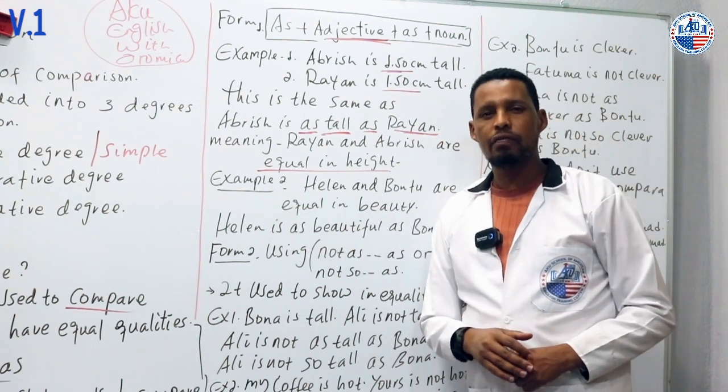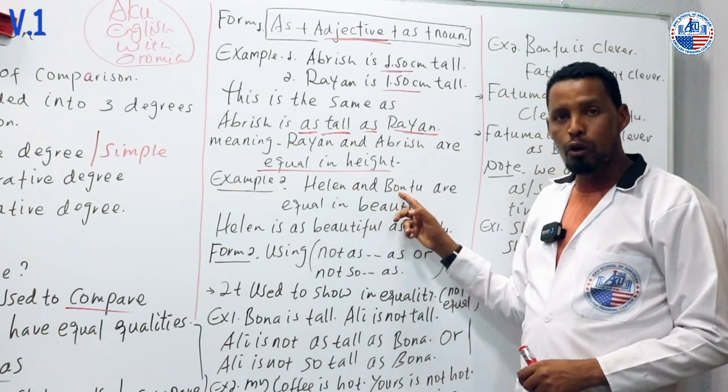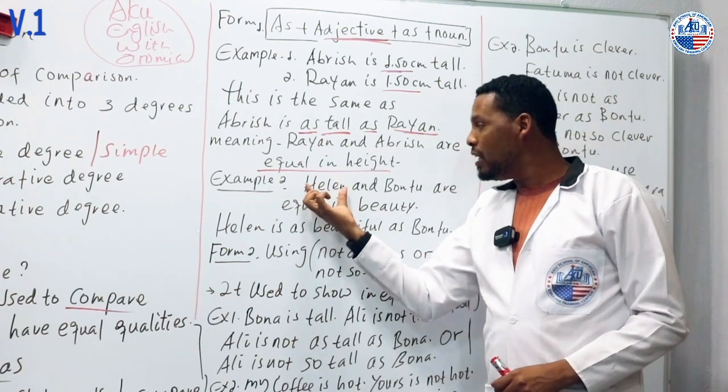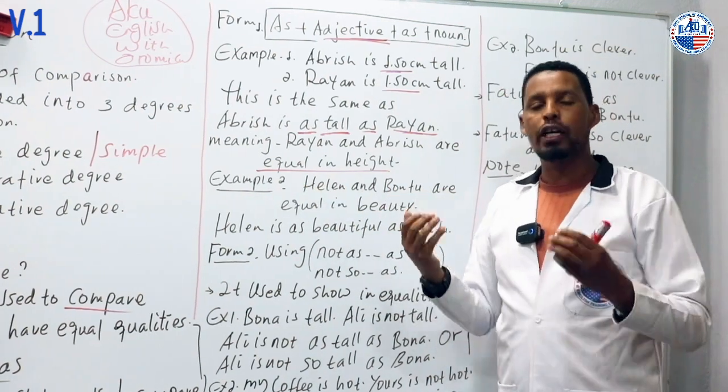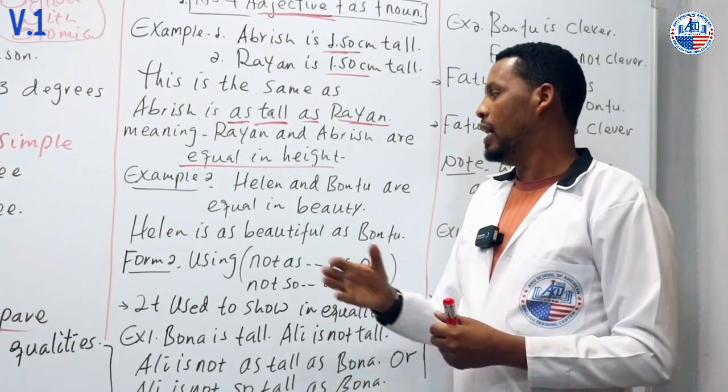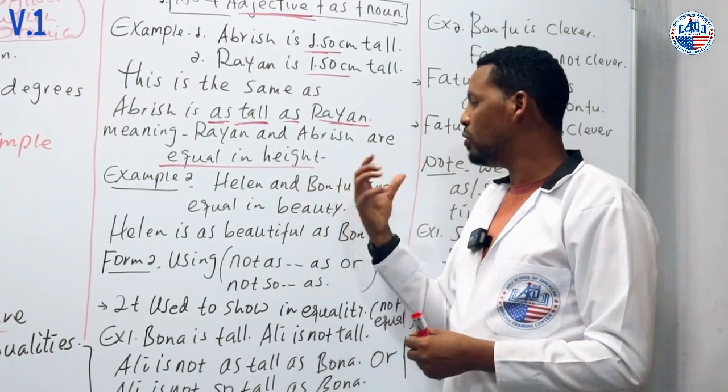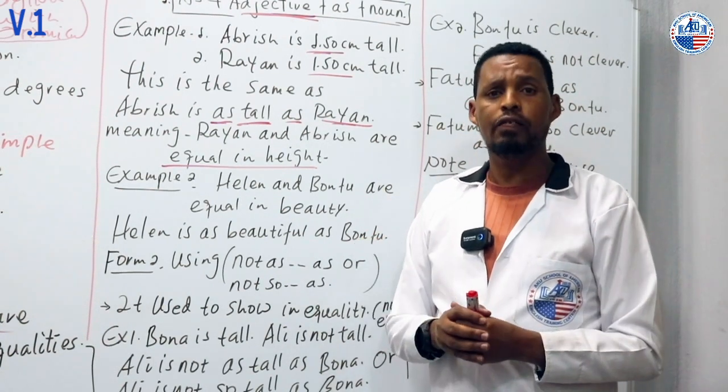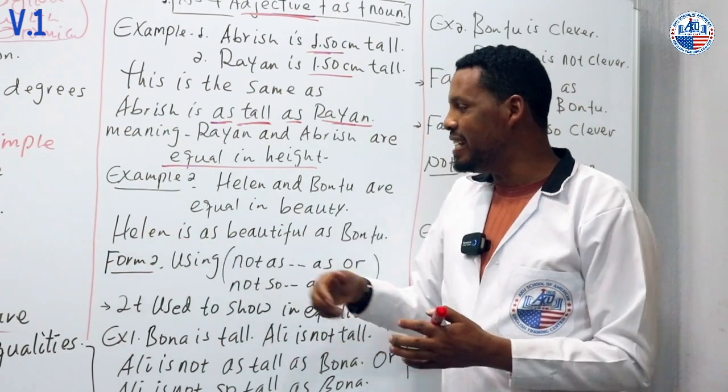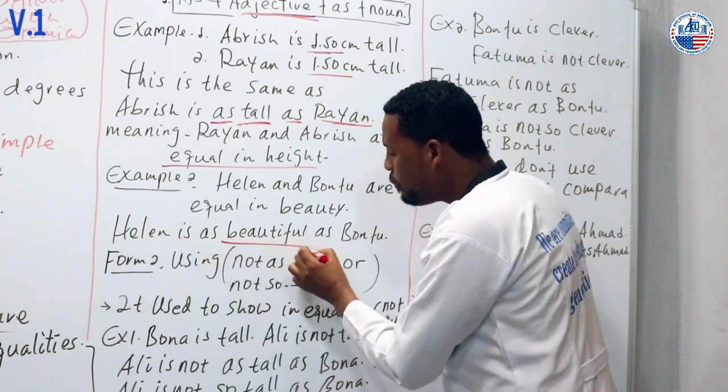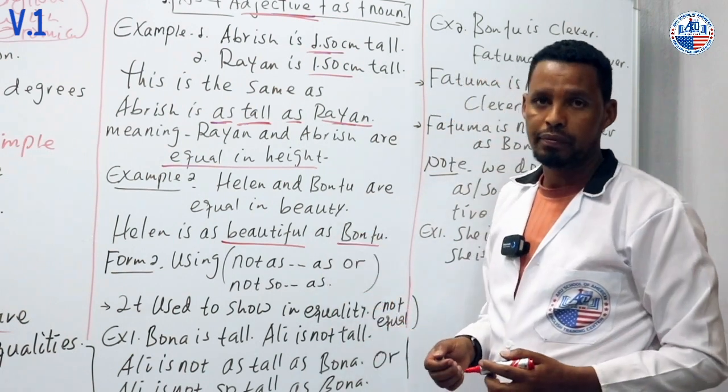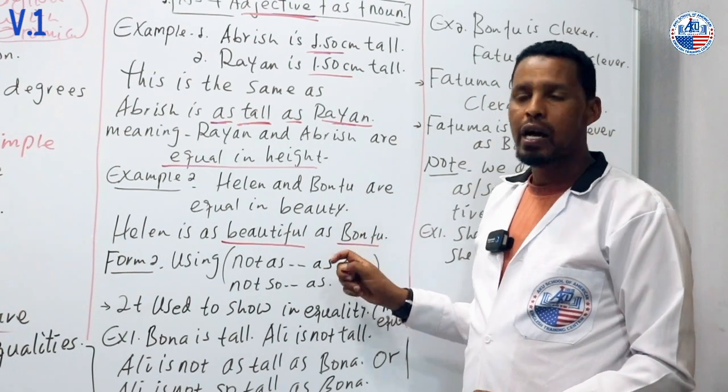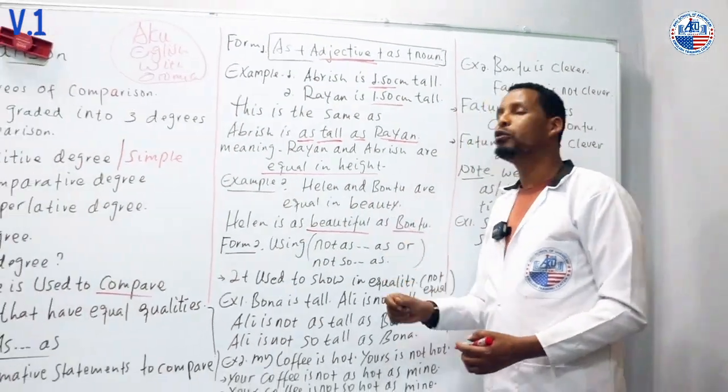Example 2: Helen and Buntu are equal in beauty. Helen is as beautiful as Buntu. This means they have the same level of beauty, so we use the positive degree with 'as beautiful as'.